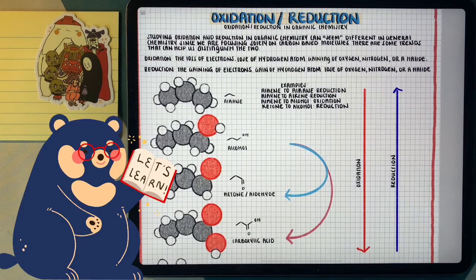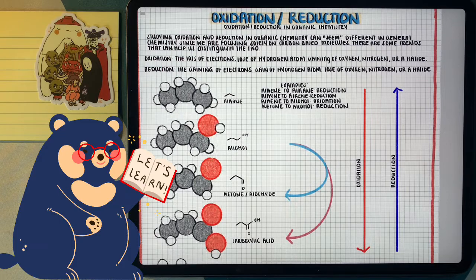When we look at oxidation, we're going to see how the loss of a hydrogen atom and the gain of an oxygen, nitrogen, or halide helps us catch that the process was oxidation. For reduction, it's going to be the gain of a hydrogen atom, the loss of an oxygen, nitrogen, or halide.